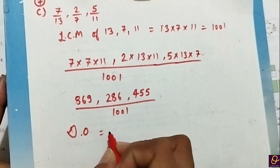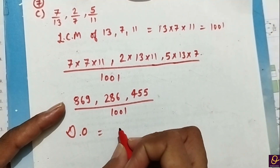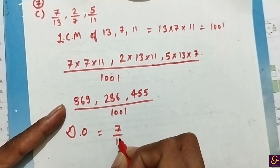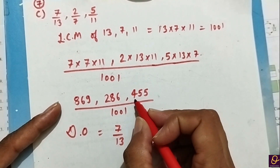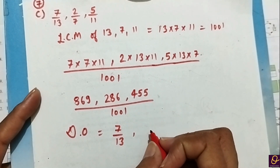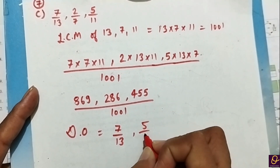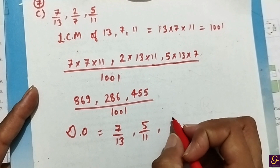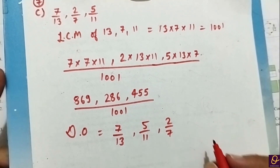Ab inko descending order mein arrange karna hai. Sabse pehle greatest number 869, that is 7 by 13; then 455, that is obtained from 5 by 11; and then the last number, 2 by 7.